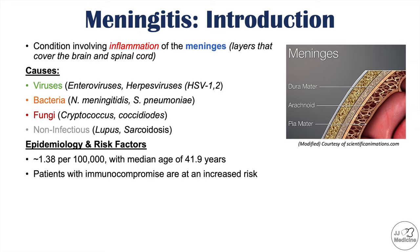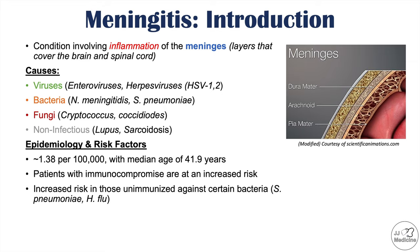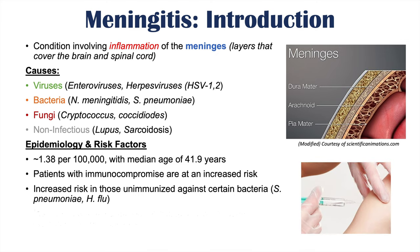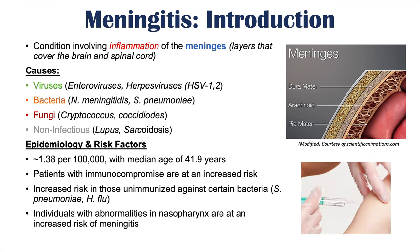Patients with immunocompromise are at an increased risk — because they are at an increased risk for getting infections in general, they are also at an increased risk for getting meningitis. There is also an increased risk in patients who are unimmunized, especially children and those unimmunized against certain bacteria like Streptococcus pneumoniae and Haemophilus influenzae. Individuals with abnormalities in their nasopharynx are at an increased risk for meningitis as well.